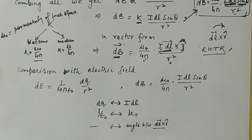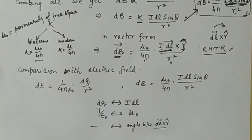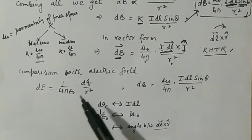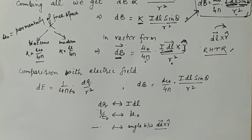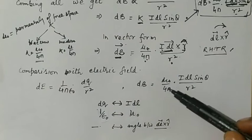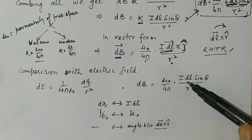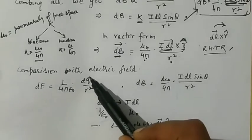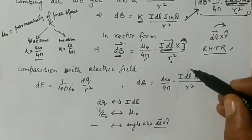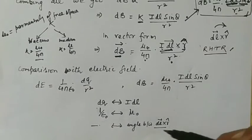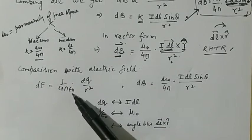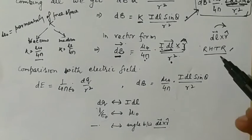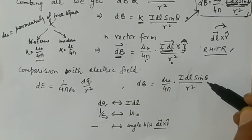Comparing with the electric field: the electric field due to a small charge is (1 / 4pi epsilon naught) × dq / r squared. The magnetic field due to a small current element is (mu naught / 4pi) × idl sine theta / r squared. The role played by dq in the electric field is played by idl in the magnetic field. The factor 1/epsilon naught corresponds to mu naught. One extra factor for the magnetic field is sine theta.